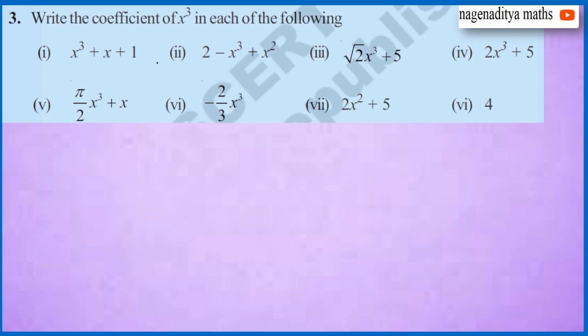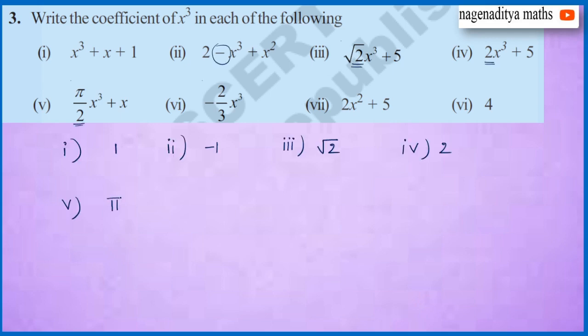The coefficient of x cube in the first one is 1. In the second one, the coefficient of x cube is minus 1. In the third one, the coefficient of x cube is root 2. In the fourth one, the coefficient of x cube is 2. In the fifth one, the coefficient of x cube is 5 by 2. In the sixth one, the coefficient of x cube is minus 2 by 3.